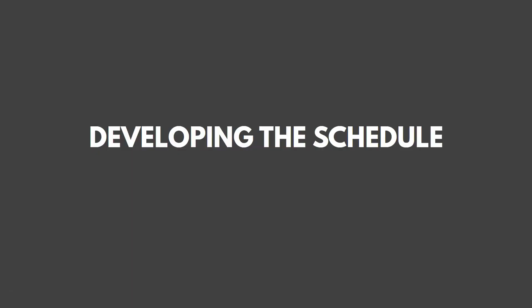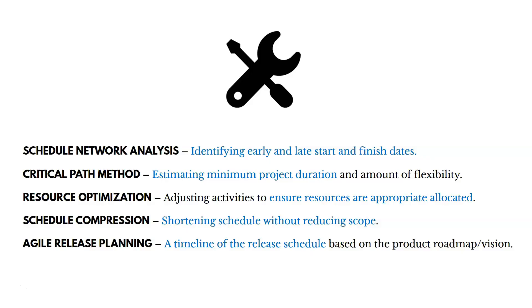Now let's talk about developing the schedule. At this point we're bringing together everything we've already created — our activities, the sequences of those activities, durations, and so on — and creating an approved schedule baseline. There are five tools and techniques: schedule network analysis (identifying early and late start and finish dates), the critical path method (estimating minimum project duration and flexibility), resource optimization (adjusting activities to ensure resources are appropriately allocated), schedule compression (shortening the schedule without reducing scope, sometimes by adding resources or money), and agile release planning (a timeline of the release schedule based on the product roadmap and vision).